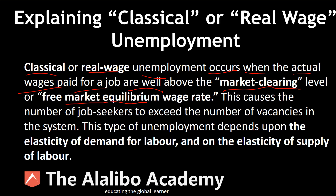For example, let's say the actual wage is $100 and the market clearing rate is $50. That is a difference of plus $50 — essentially a 100% increase. Because of this wage increase, the demand for these jobs becomes very high.